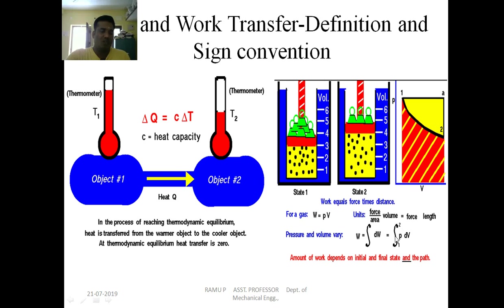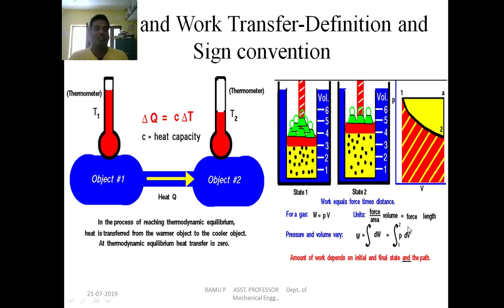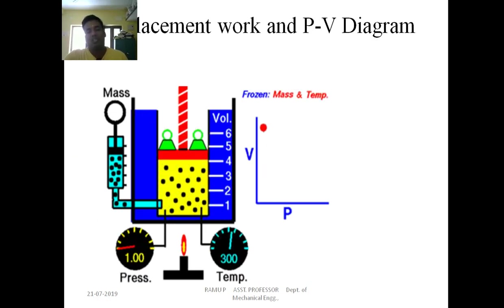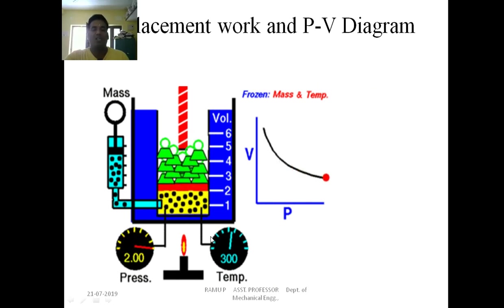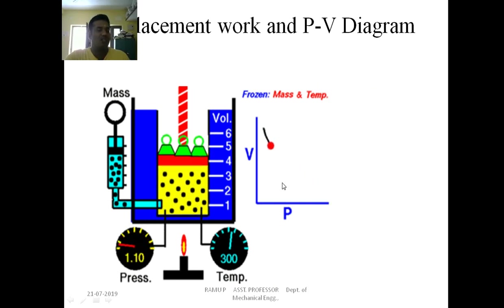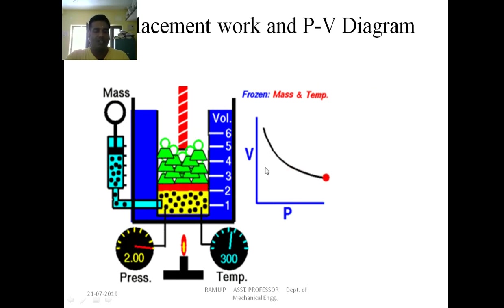In a cyclic process, work is force times distance. In terms of thermodynamics, work is pressure times change in volume (PDV). The displacement of work in a PV diagram shows that when volume decreases, pressure increases, and when volume increases, pressure decreases. The area under the curve in a PV diagram represents the work or heat transformation in any process.